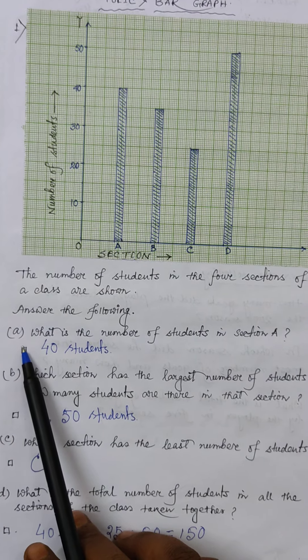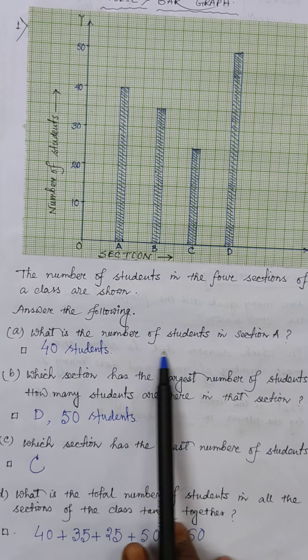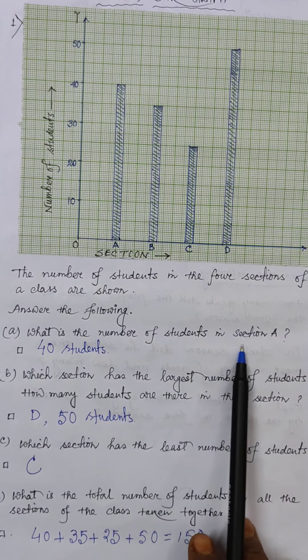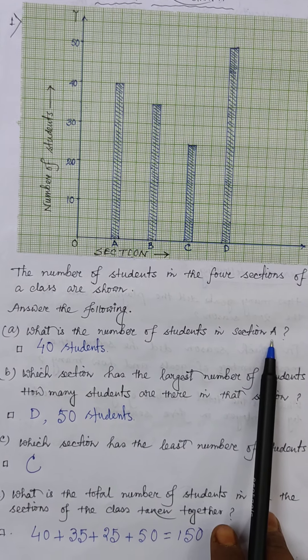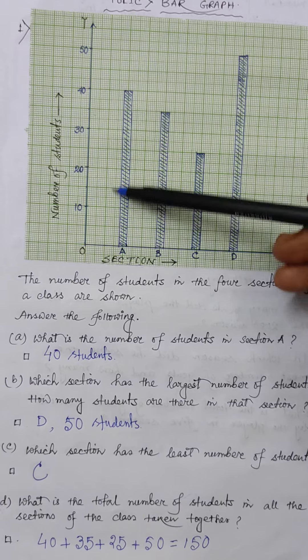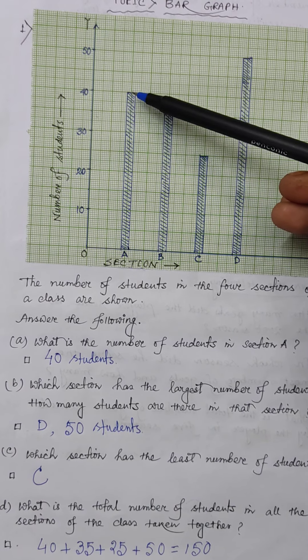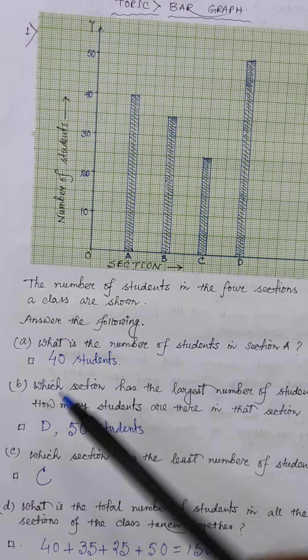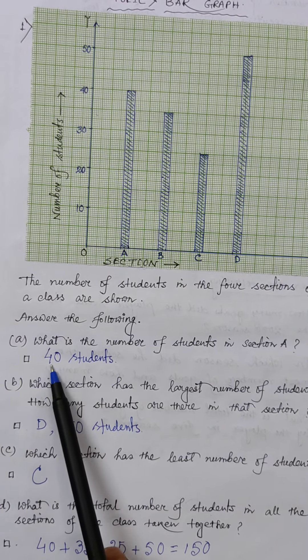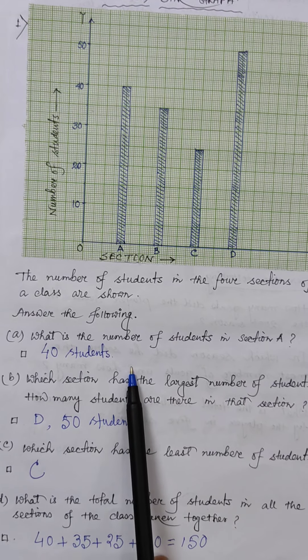Question a: What is the number of students in section A? You can see the height of the bar is up to 40, so there are 40 students.